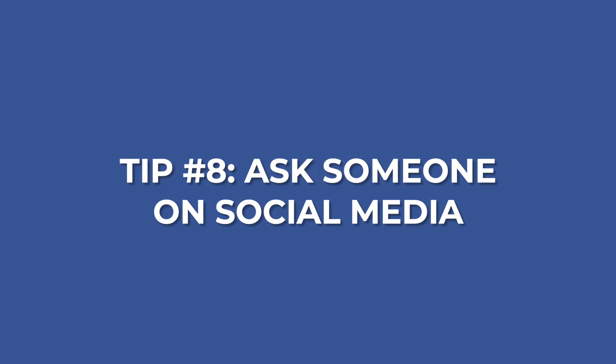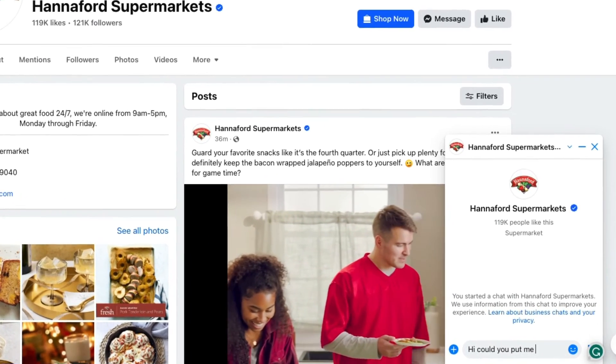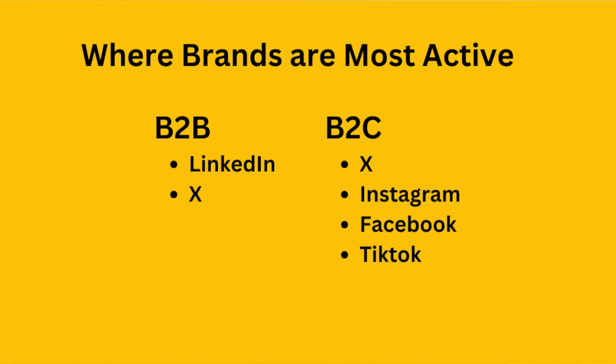Tip number eight is to ask someone on social media. If you can find their social media, get friendly. This tactic is essentially the same as the chatbot, but you're going to message them and try to connect. If it's an individual person, follow them and interact with them on social before DMing them. We found that if you get on their radar before asking for an email address, it's going to be a lot easier — it lowers that barrier of entry. Be selective on where you reach out: B2B brands are probably more active on X or LinkedIn, whereas B2C brands might be more active on Instagram, Facebook, or X.